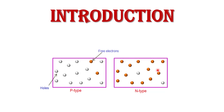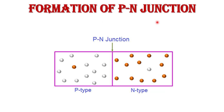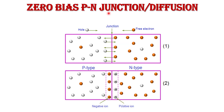Now, the formation of p-n junction. To form a p-n junction, we take a p-type semiconductor having majority carrier holes and minority carrier electrons, and one n-type semiconductor having majority carrier electrons and minority carrier holes. To form the p-n junction, we join the p-type and n-type semiconductor together with the help of a special fabrication technique. When we join these two materials, a junction is formed — that is called the p-n junction.